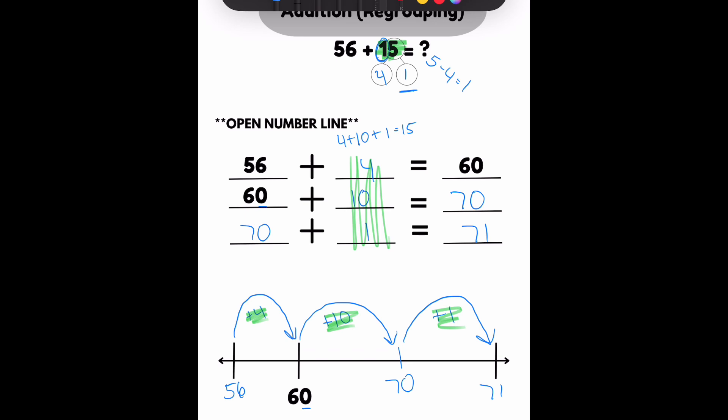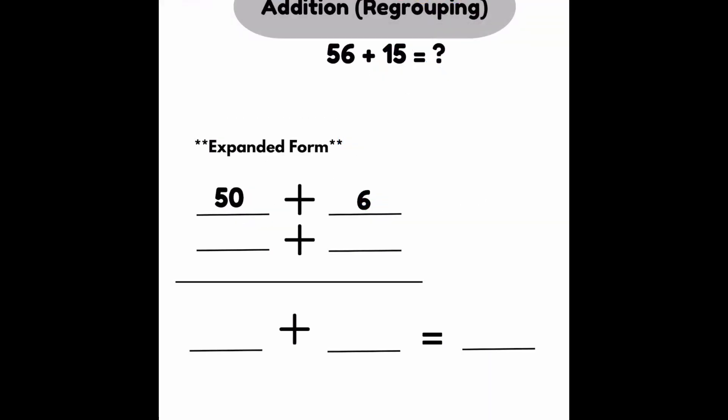We're going to look at another example. Starting with the same exact problem, now I'm going to look at expanded form. And if you notice, 56 broke up into 50 plus 6. So now I need to break up 15. Because that's the other number in the equation. So I'm going to break it up by 10s, and I'm going to break it up by 1s when I'm doing expanded form.